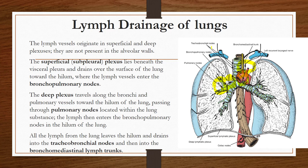The nodes around the trachea and bronchi are called tracheobronchial lymph nodes. The nodes around the bronchi and lung substance are called bronchopulmonary lymph nodes. The trunk present around the bronchi and in the mediastinum is called the bronchomediastinal lymph trunk. This completes the lymphatic drainage of the lungs.